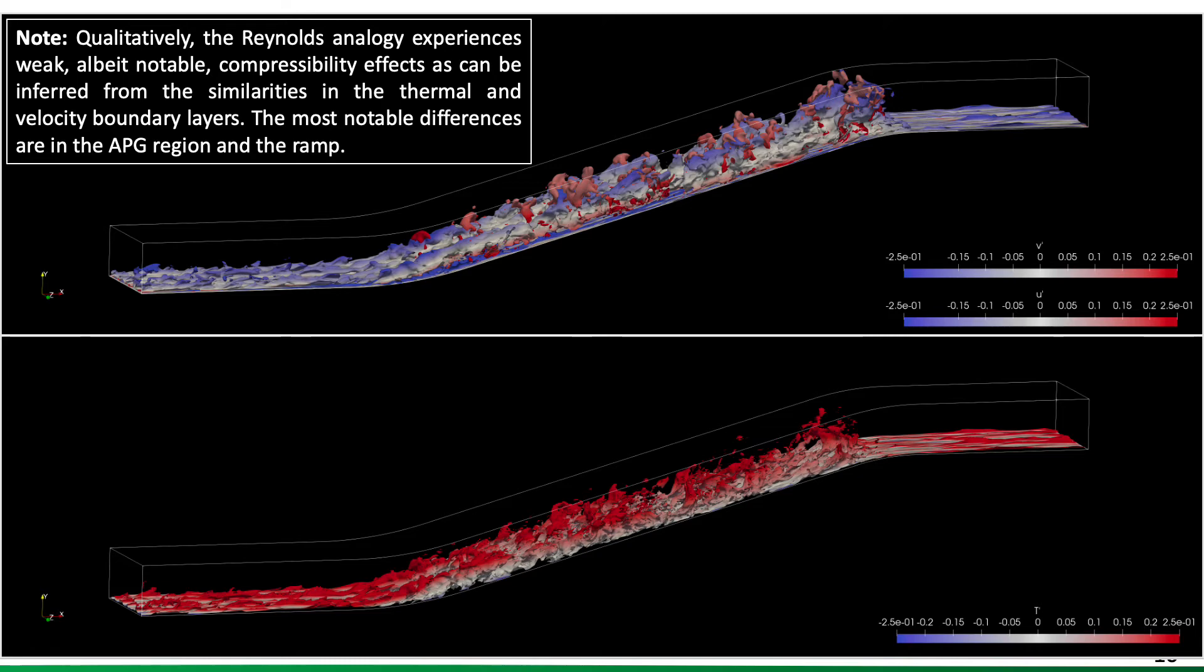And here we focus on something similar at the top, the velocity colored by velocity fluctuations. In the bottom now, you see the temperature profile colored by the fluctuation. And qualitatively, we could argue that the Reynolds analogy suffers a weak, albeit notable, compressibility effect, as can be inferred from the similarity in both thermal and velocity boundary layers. However, most notable differences are in the adverse pressure gradient region and the ramp, where most notable distinction between both boundary layers can be seen. And this is, of course, qualitatively.